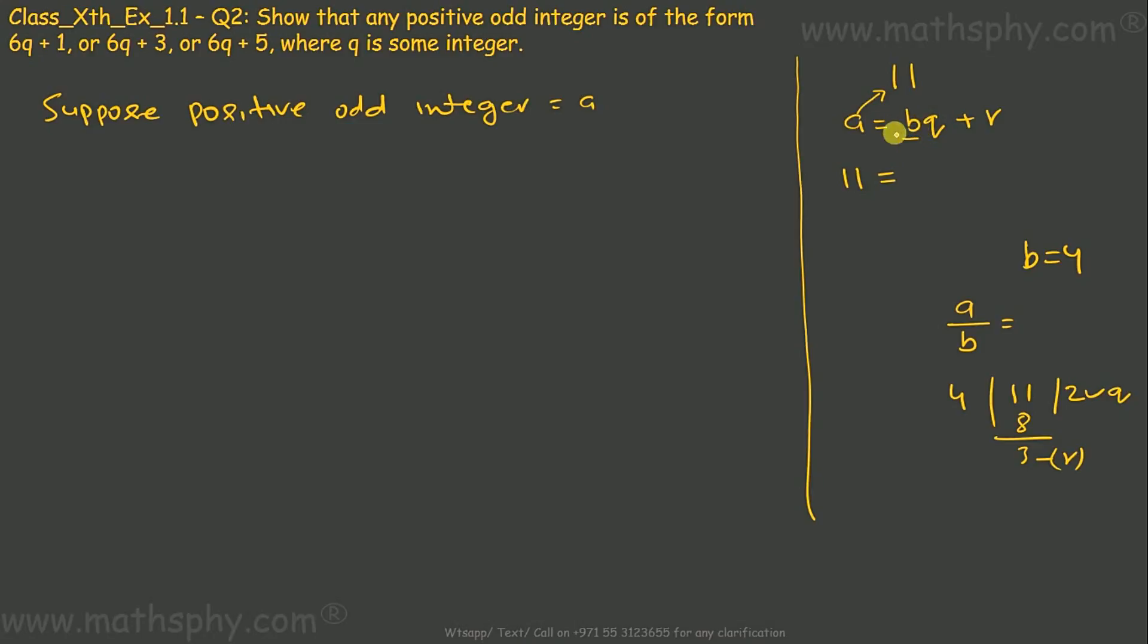So this 4 goes in place of b. When I divided a by b, I got 2 as my quotient, which is q here, so I write 4 into 2 plus... I got 3 as remainder, so 3 comes at this place r. Now if you see, 11 is a, 4 is b, 2 is q, and 3 is r. This 11 is in this format a equals bq plus r. Now here I have taken that positive odd integer as a.